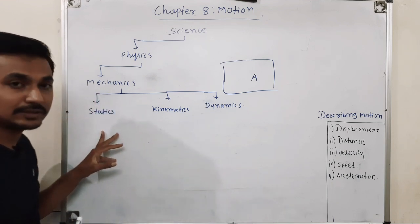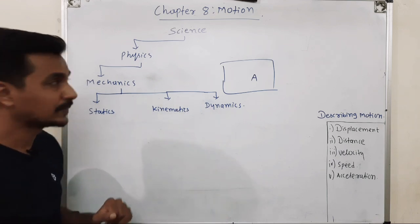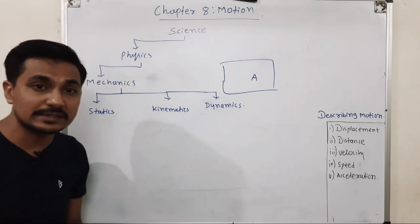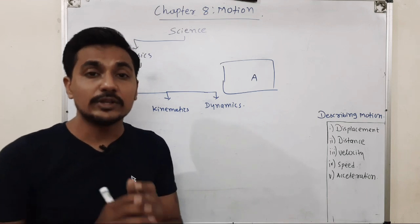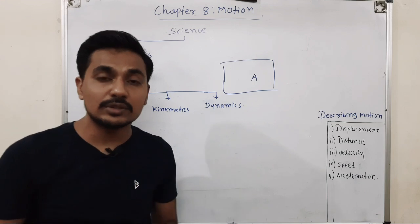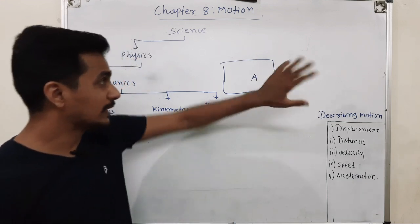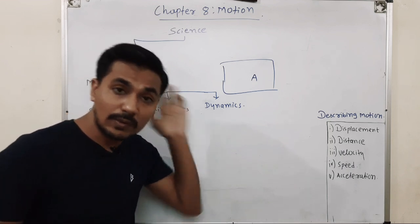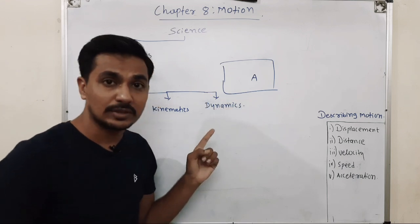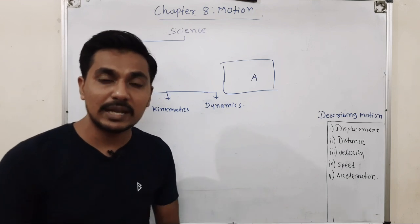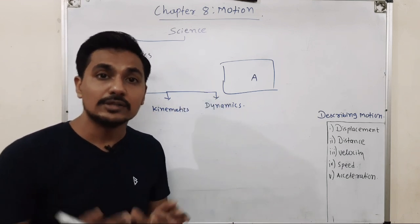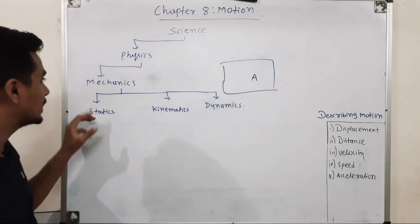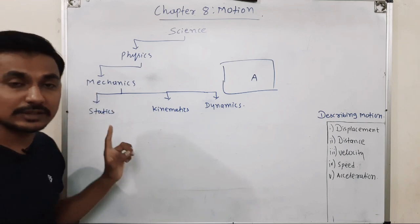Motion is related to the particular branch called mechanics. Mechanics is divided into three parts: statics, kinematics, and dynamics. Science is a study of the nature of all things. Similarly, physics is the branch of science which deals with the study of nature and related phenomena — why the sky is blue, why the earth revolves, why objects stick to surfaces due to friction.